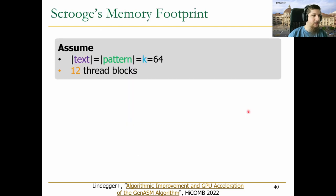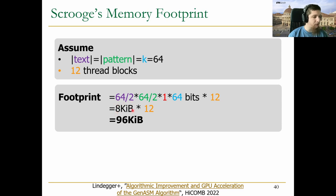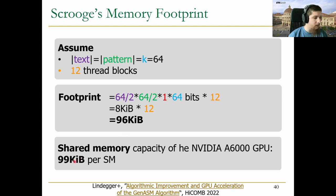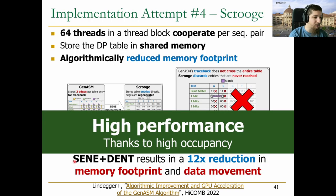With these two improvements — SENE and DENT — we arrive at our fourth implementation attempt, Scrooge. We again have threads cooperating in a thread block using shared memory, and now we algorithmically reduce the memory footprint. SENE gives 3x reduction and DENT gives 4x reduction, and together they combine well to give a 12x total reduction in memory footprint and data movement. Checking the memory footprint again for text and pattern length of 64, we get 12 thread blocks — since we have a 12x reduced footprint, each thread block uses only 8 kilobytes, and these 12 × 8 = 96 kilobytes fit into the shared memory capacity of the A6000 GPU. These 12 thread blocks are enough to achieve high occupancy, giving us much higher performance.